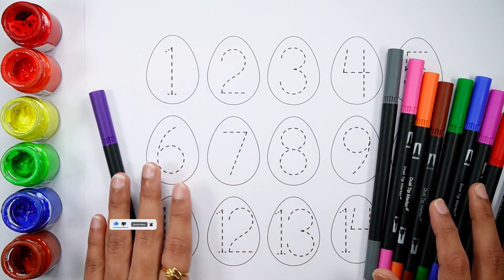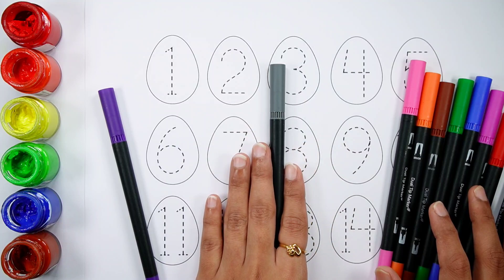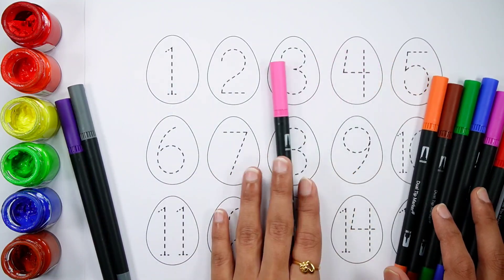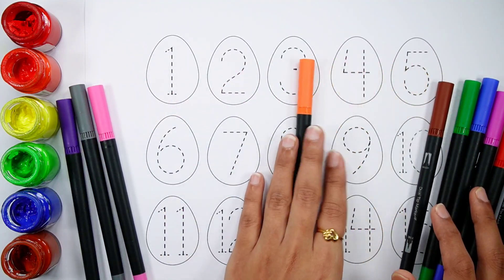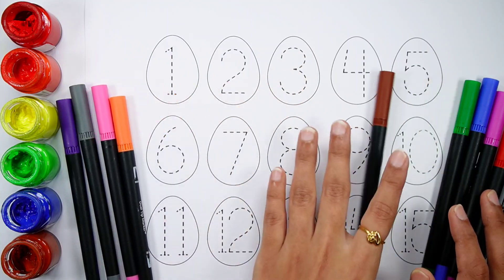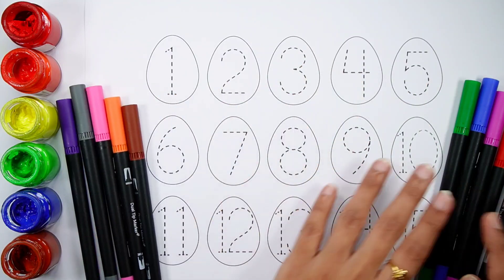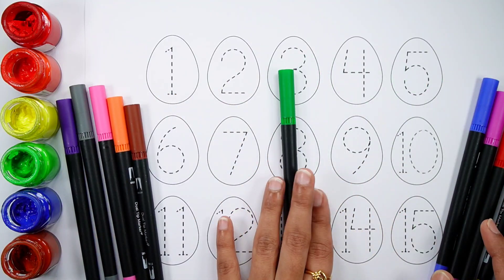Violet color, gray color, pink color, orange color, brown color, light green color.